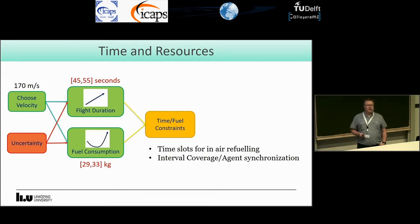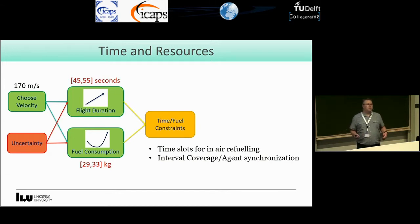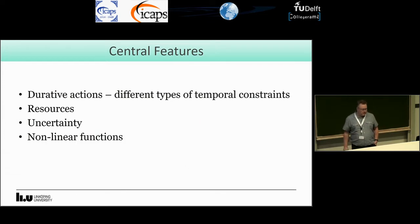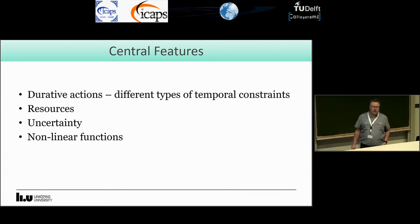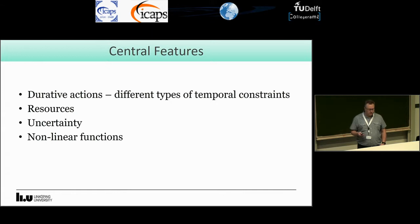Usually one agent is not enough to cover the whole interval — you might have to go and refuel in between. So you need to synchronize with other agents to make sure they come in and there is no gap when you hand over. The central features of this domain are durative actions with different types of temporal constraints, resources, uncertainty leading to uncontrollable durations, and non-linear functions for the resources.